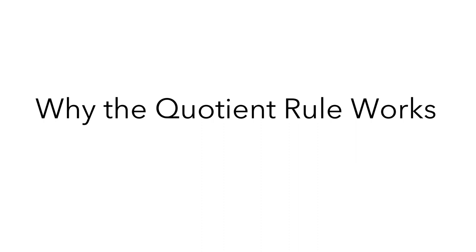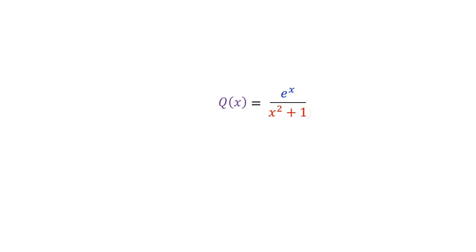In this video, I'll explain why the quotient rule works. Let's start with an example. Q of x equals e to the x over x squared plus 1. And we need to make sure that the denominator isn't zero. Luckily for us, x squared plus 1 is always positive, so this won't be an issue here.